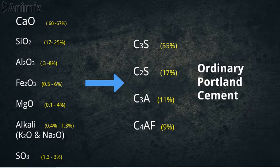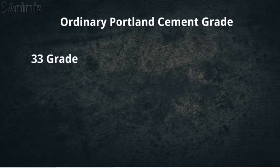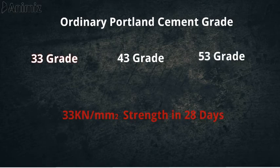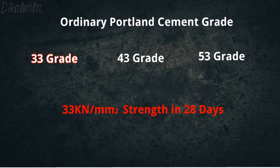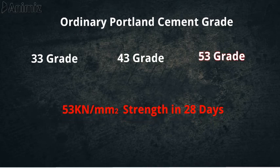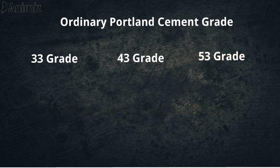Ordinary Portland Cement is available in the market in 3 grades, and the grade is based on strength. The 33 grade has a 28-day strength of 33 kN/mm², the 43 grade has 43 kN/mm² in 28 days, and the highest grade available is 53 grade, which has 53 kN/mm² in 28 days. That's all about Ordinary Portland Cement.